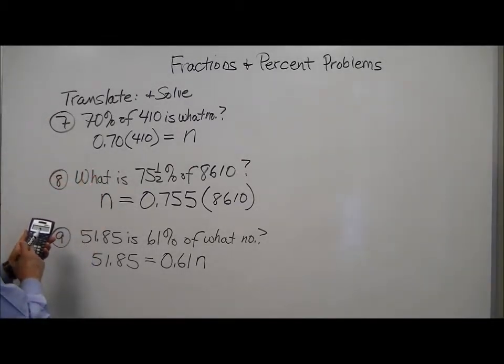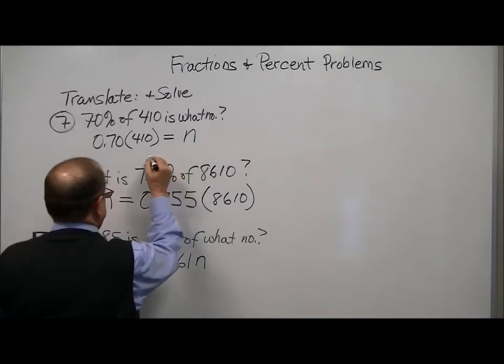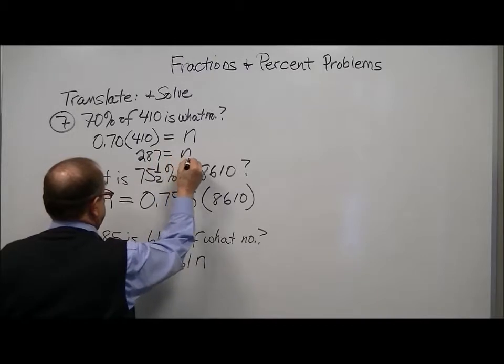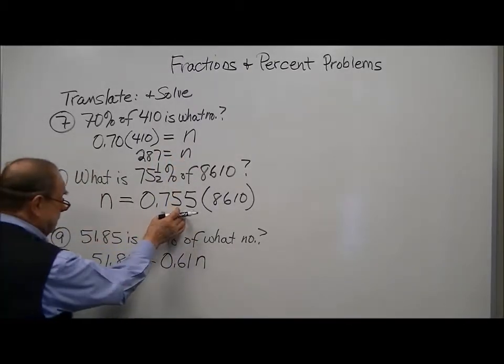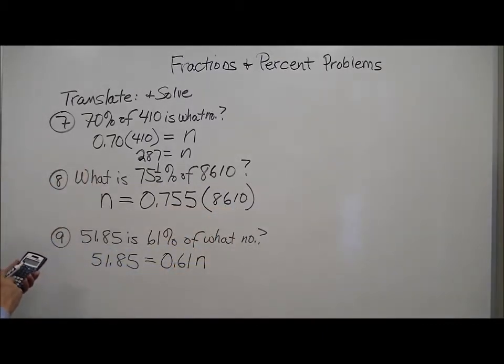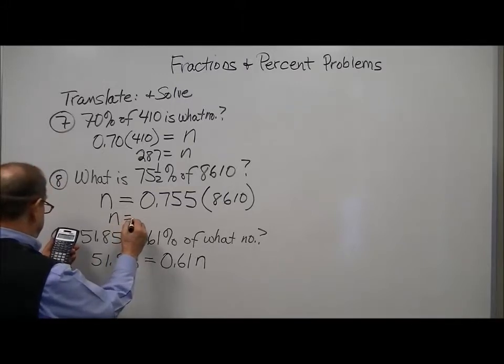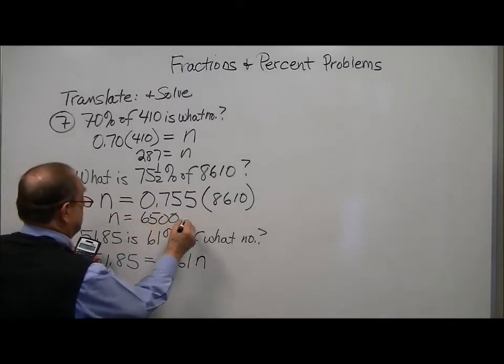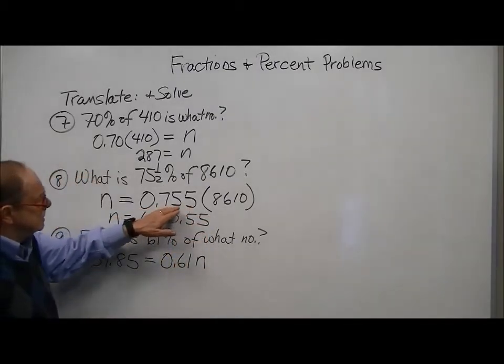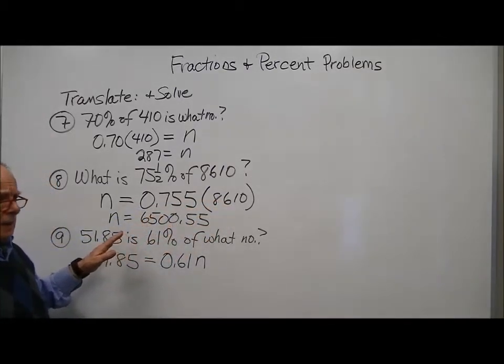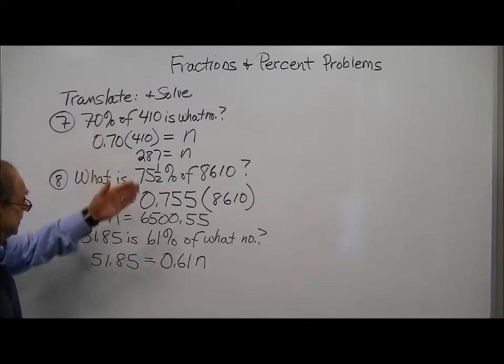You can use your calculators. So here it's just .70 times 410, which is 287. And here it's just this times that. So n equals 6500.55. And notice, it's 75% of this, that's about right. You often have to look and see, did you get a reasonable answer? And these are reasonable.